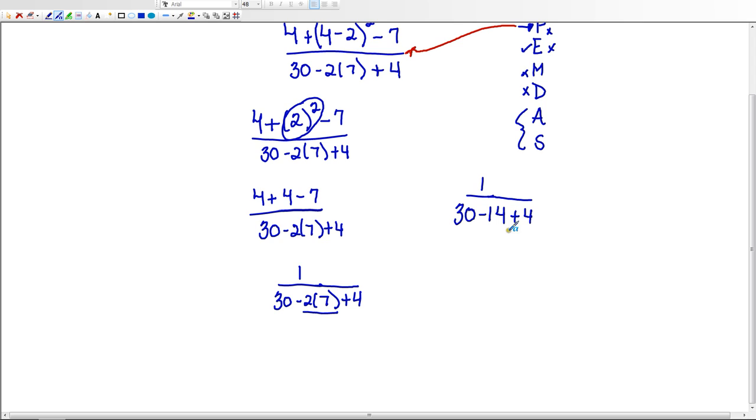And now notice that I'm left with all addition and subtraction. So I have no multiplication or division, and I've just addition and subtraction left. So I'm going to start from left to right. 30 minus 14 is 16, and 16 plus 4 is 20.